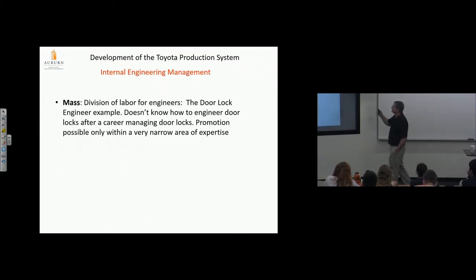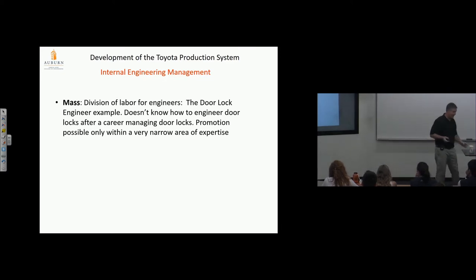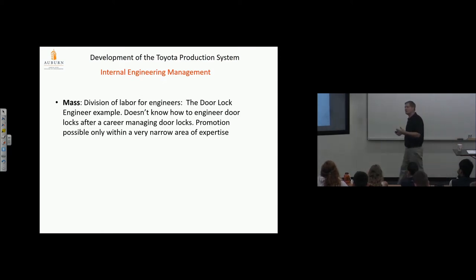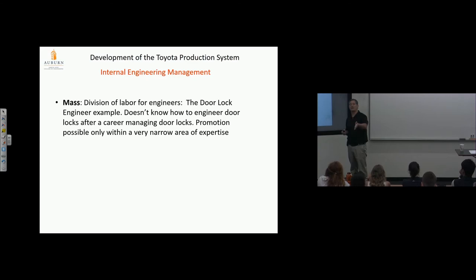Internal engineering management. Mass production: division of labor for engineers. The door lock engineer example—I had a door line at Sterling Heights Assembly. This great guy said he was the engineer for door systems, but I don't think he could have designed anything on the door. His job was to interface with the supplier, make sure they weren't screwing up. He became almost a bureaucrat and administrator, not a design engineer. The suppliers designed the product, quoted the prices. He made sure they met quality requirements. If something didn't work, he'd be hammering the supplier. There's a question about the airbag problems with Toyota and Honda, Takata. Why would you ask me a question I can't even begin to answer?